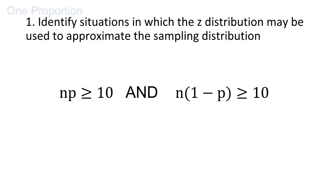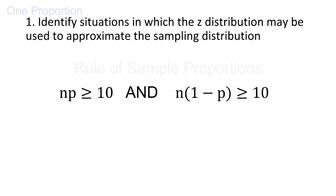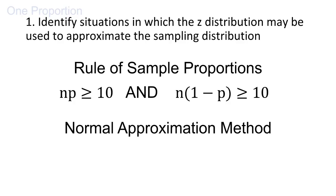If n times p is at least 10, and if n times 1 minus p is at least 10, then we can use the Z distribution to approximate the sampling distribution when constructing a confidence interval or conducting a hypothesis test. Note that n times p is the number of successes, and n times 1 minus p is the number of failures. This is known as the rule of sample proportions. This is defining what we mean by 'sufficiently large' when working with one proportion. When these conditions are met, use the Z distribution — this is known as the normal approximation method. The sampling distribution will have a standard error equal to the square root of p times 1 minus p divided by n.